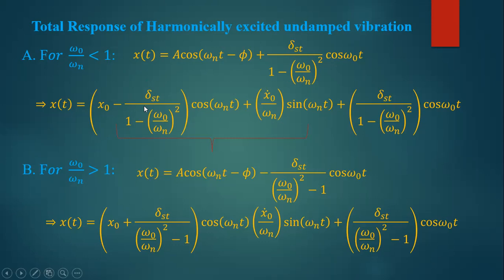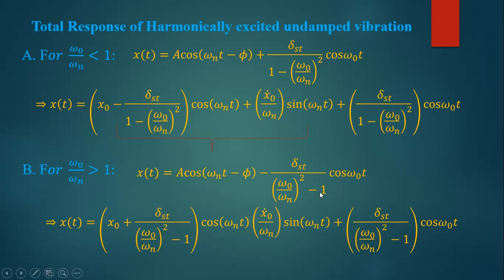This is the total response for omega naught over omega n not equal to one. If omega naught over omega n equals one, that is the resonance condition, which we already discussed. So we focus on the region of ratio less than one and ratio greater than one. In the case where omega naught over omega n is greater than one, we have these parameters change — we see omega naught over omega n minus one, rather than one minus omega naught over omega n. There are some changes here, because of this minus sign. I advise you to see the previous lectures.